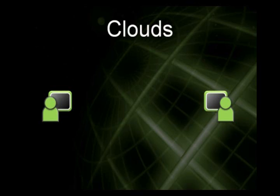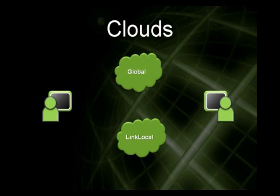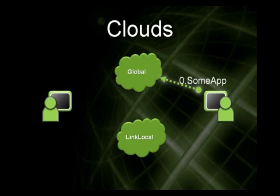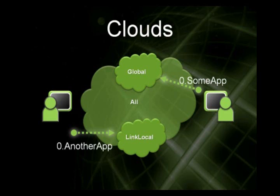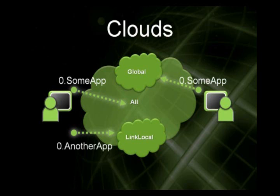This brings us to the idea of clouds. There are actually different types of clouds within PNRP — a global cloud and a link local cloud. A peer name can register into the global cloud, which represents the entire internet, so anyone can find it from anywhere. There's also a link local cloud, related to the direct subnet your particular adapter is connected to. If you had multiple adapters — say a wireless card on one network and a hard line on another — you'd have two distinct link local clouds. You can register an application into one or all of the clouds, making it available either globally or locally.